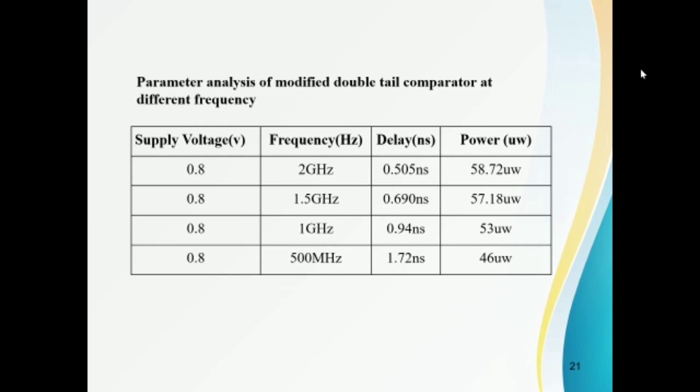Let's see into the parameter analysis of modified double tail comparator at different frequencies. Here the supply voltage supplied is 0.8V for all the four categories. But there is change in frequency for different voltages supplied and we can get a delay on power in differences.